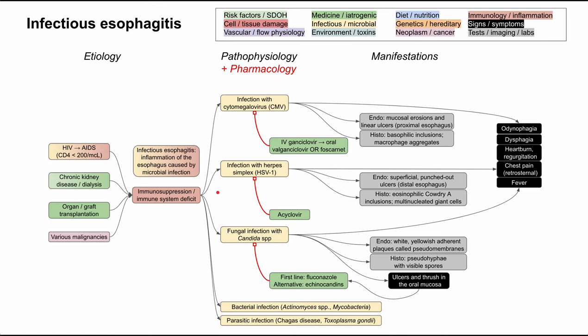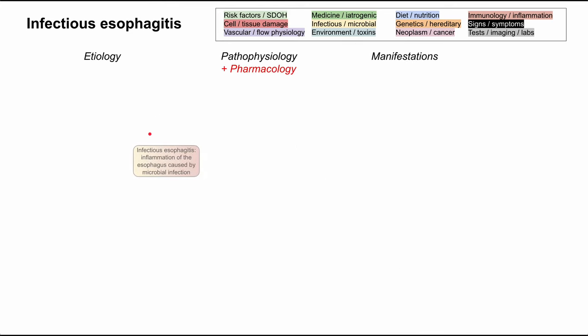This is a mechanism of disease map for infectious esophagitis. I'll be talking about the etiology, the pathophysiology, the pharmacology, and the manifestations of infectious esophagitis. Each of these bubbles is color-coded according to the legend. Infectious esophagitis is when you have inflammation of the esophagus caused by a microbial infection. This typically only happens in patients that are immunosuppressed or that have some other immune system deficit.